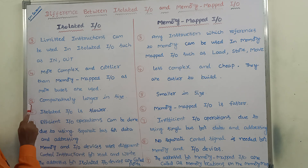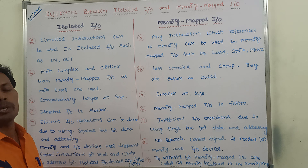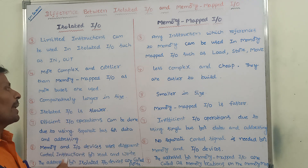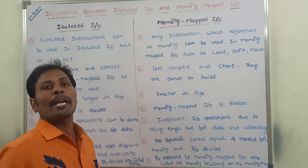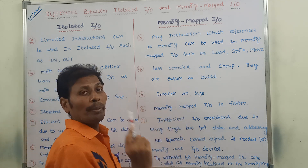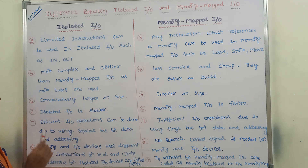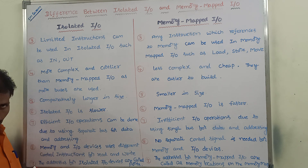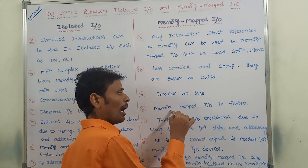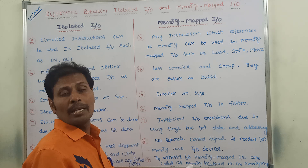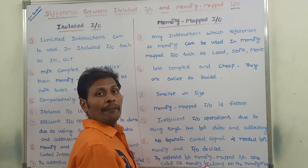The fifth point: isolated I/O is comparatively larger in size because more buses are used. Whereas memory mapped I/O is smaller in size because fewer buses are used. The sixth point: isolated I/O is slower whereas memory mapped I/O is faster, because the same address bus, data bus, and control bus are shared in memory mapped I/O, allowing operations to be done faster.